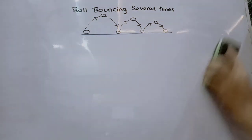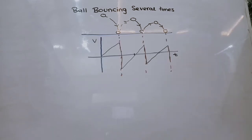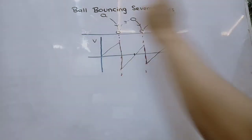Now let's first sketch the velocity-time graph for this and discuss what the velocity-time graph will look like. So this is how our velocity-time graph would look like for a ball bouncing several times, each time the height decreases.